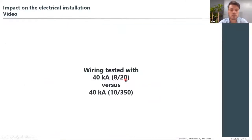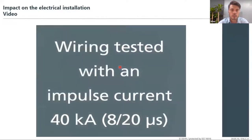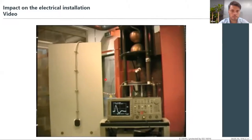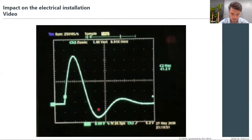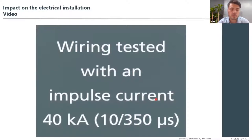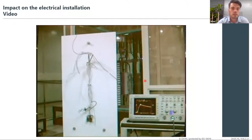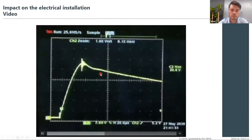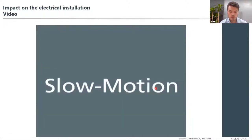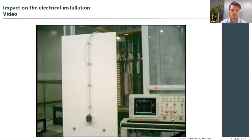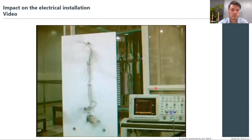From this test, we chose the same current magnitude of 40 kA with a different wave shape. From the video, the first test was conducted by injecting a 40 kA peak lightning impulse — you can see that nothing happened to the installation at 8/20. But with the same current magnitude injected as a 10/350 waveform, the amount of energy transferred to the electrical system was significantly greater, demonstrating that wave shape determines the energy delivered.